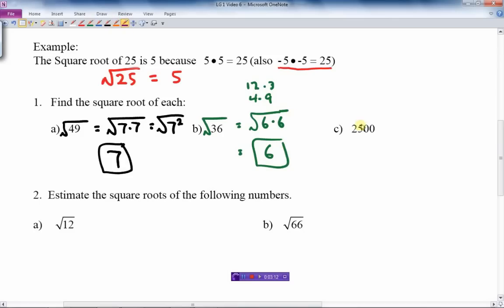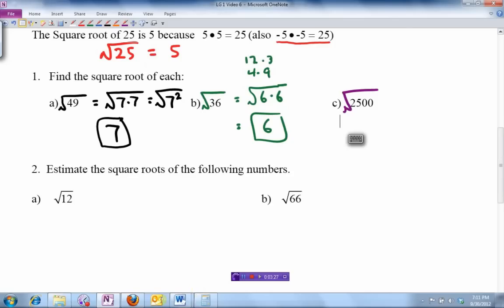And the last one here is what's the square root of 2,500? Well, what number times itself gives me 2,500? If I take it and I punch it in a calculator, I can do it that way if I'm not sure what it is.